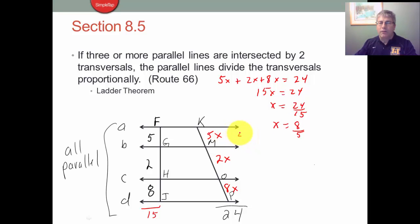So this is 5 times 8 fifths, so KM is 8. This is MO, 2 times 8 fifths, or 16 fifths, which is 3 and 1 fifth.